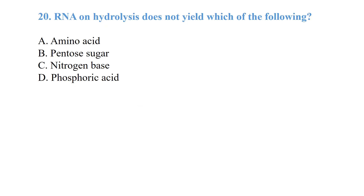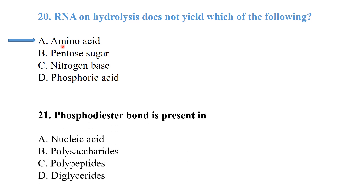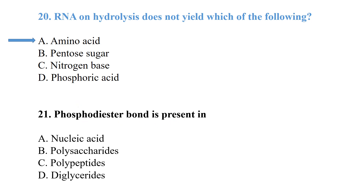Question number 20: RNA on hydrolysis does not yield amino acids. Amino acid is the unit of proteins, not the unit of RNA. Question number 21: the phosphodiester bond is a general question — it is present in nucleic acids.